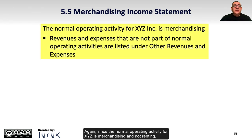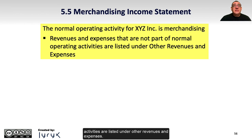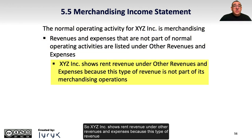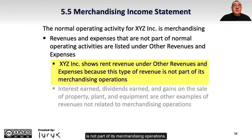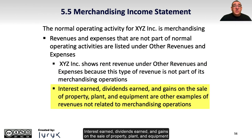Since the normal operating activity for XYZ is merchandising and not renting, revenues and expenses not part of normal operating activities are listed under other revenues and expenses. XYZ Inc. shows rent revenue under other revenues and expenses because it is not part of its merchandising operations. Interest earned, dividends earned, and gains on the sale of property, plant, and equipment are other examples of revenues not related to merchandising operations.